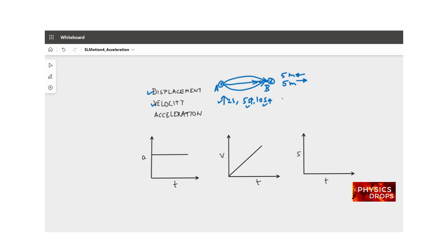Velocity moves the object at a faster or slower rate. For example, if I have a velocity of 5 meters per second, then every second I am getting displaced by 5 meters in a particular direction.